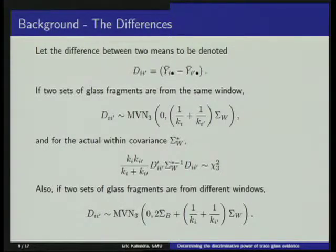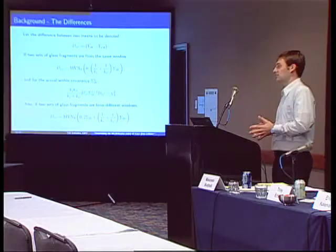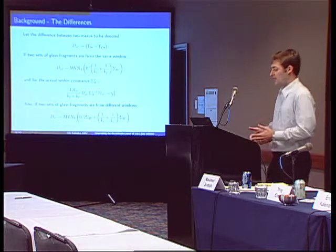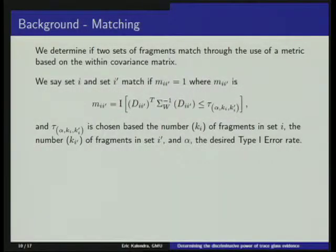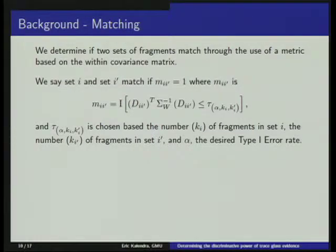In terms of variance, it's 1 over the first sample size plus 1 over the second. There's a slight problem if you only have one shard from your suspect — that's going to limit how much information you can obtain in the comparison. If you actually know the within-covariance structure, the Hotelling T-squared statistic conveniently follows a chi-square distribution, which is used to set the Type 1 error rate, or false rejection rate. Hotelling T-squared is the metric used — it is only dependent upon the within-covariance structure, and you set a threshold tau in order to fix your Type 1 error.